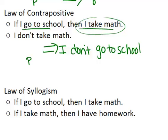then it means the negated part of the first hypothesis also has to be true. So the symbolic notation for this would be, if P, then Q is true. So if I go to school, then I take math. We know that's true. And we also know that I don't take math, not Q, the opposite of the second part of your statement. The overall conclusion is that you must not do the original hypothesis, not P.